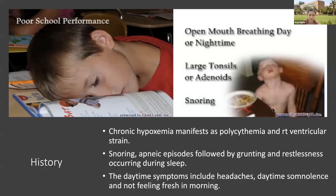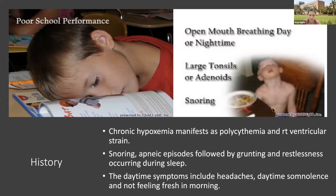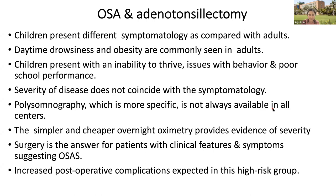Coming to obstructive sleep apnea — in children, the presentation may differ from adults. While daytime sleepiness is a feature in adults, in children poor school performance may be a very prominent symptom. Open mouth breathing during day and night indicates large tonsils or adenoids. Chronic hypoxemia will manifest as polycythemia assessable via hematocrit. Right ventricular strain may be present due to chronic hypoxemia. Snoring and apneic episodes followed by grunting and restlessness during sleep should be elicited from parents. Daytime symptoms may include headache, daytime somnolence, and not feeling fresh in the morning.